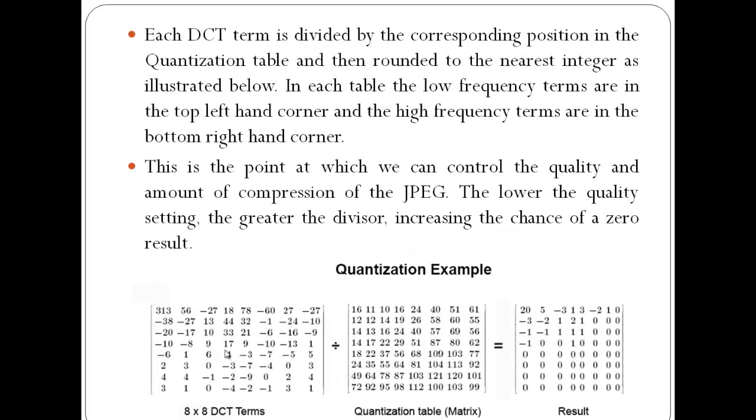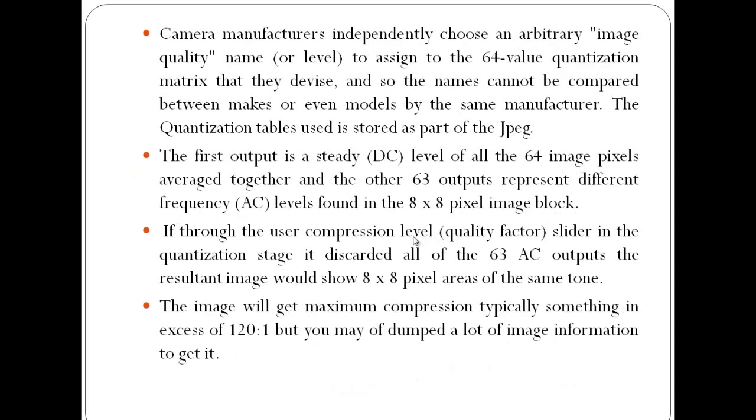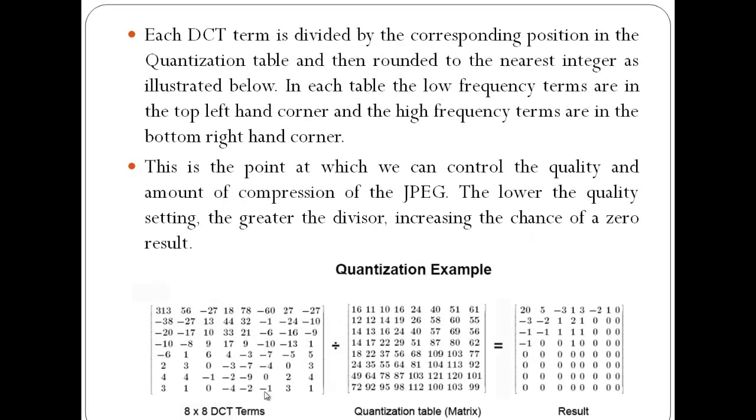The first component after the DCT is the DC value of all the 64 image pixels averaged together. If I add all these up and divide, I would get 313 after the DCT of my 8x8.